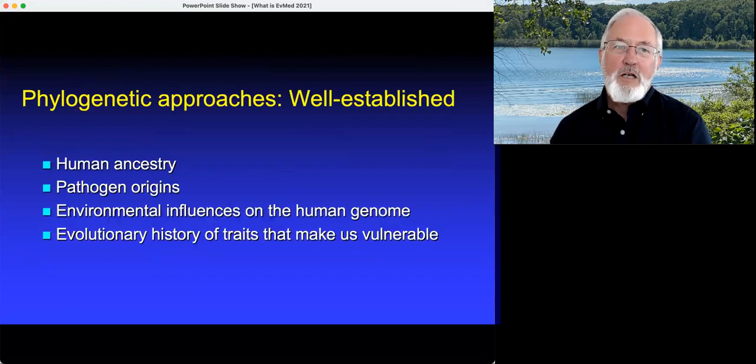The first is well established. Phylogenetic approaches are very well developed ever since the grand synthesis between genetics and evolutionary biology in the middle of the 20th century. We use them to trace human ancestry, to trace pathogen origins, especially things like COVID, environmental influences on the human genome, such as what happens when humans move to cold climates or when they're exposed to a plague. And finally, there's the especially interesting evolutionary history of traits that make us vulnerable, like comparative anatomy of the appendix.